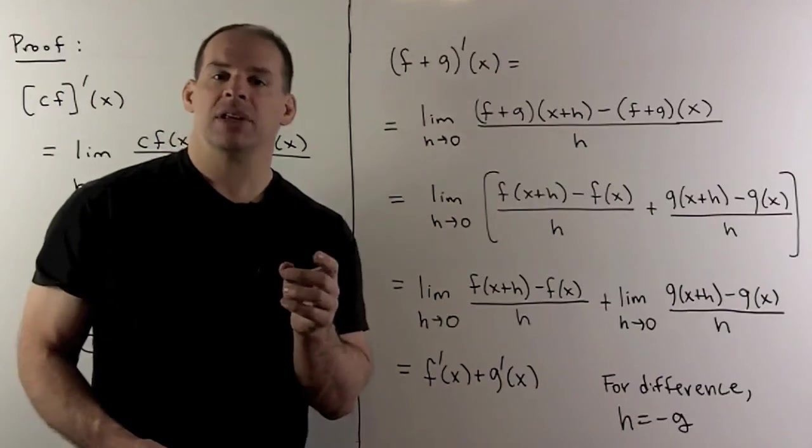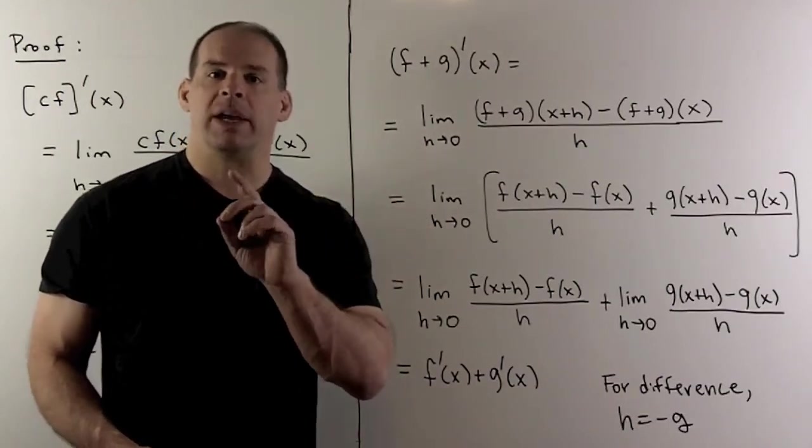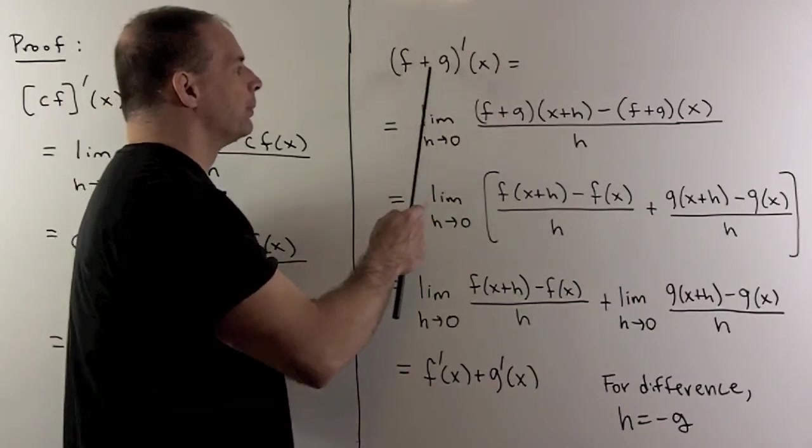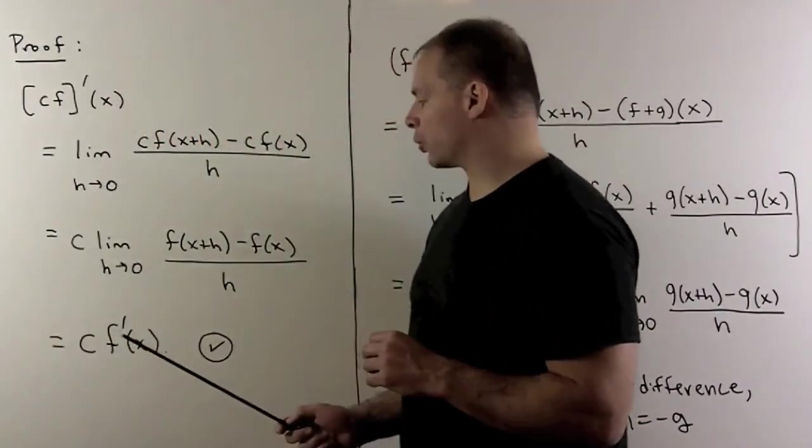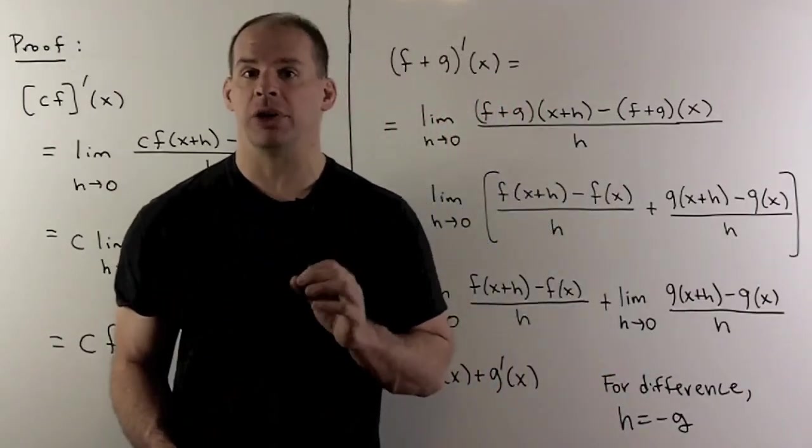Now, that leaves the result for the difference. Clever way to get that is just to let your g be equal to minus g. And then we can apply our first rule. So here I'll let c be equal to minus one, which is a perfectly good constant.